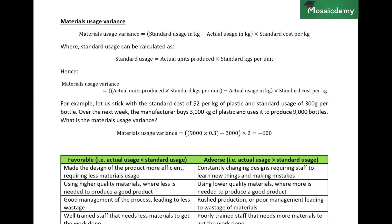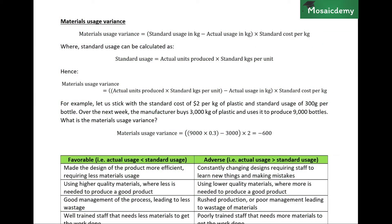Materials cost variances can be split up into two variances: materials price variance, which looks at the cost component, and materials usage variance, which looks at the quantity component. This is where we analyze if we used more or less materials than we should have — if we wasted too much or had to use excess material, all of that is analyzed in the materials usage variance.